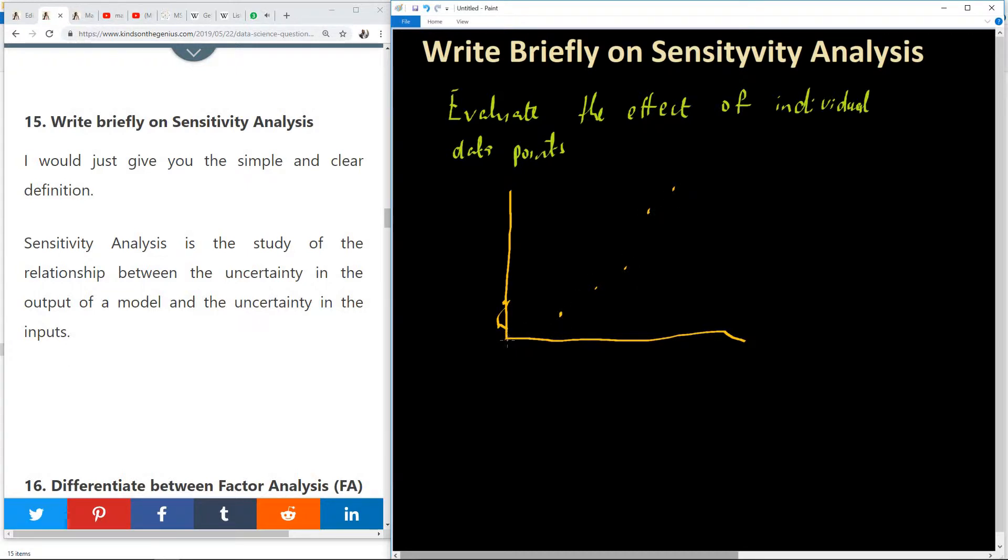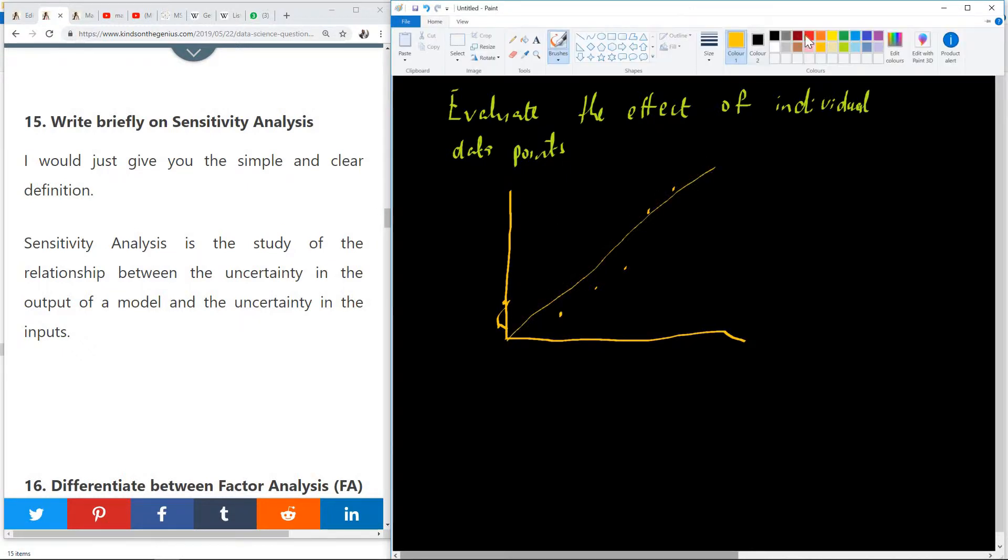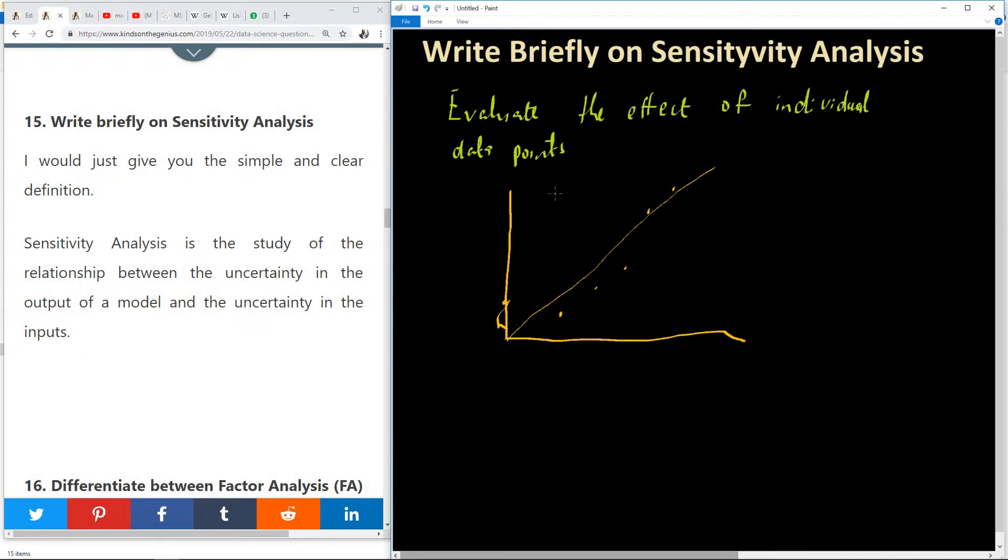We can do a regression line but what if along the line we have one data point at this place? This becomes a problem and that gives us the notion of outlier analysis.